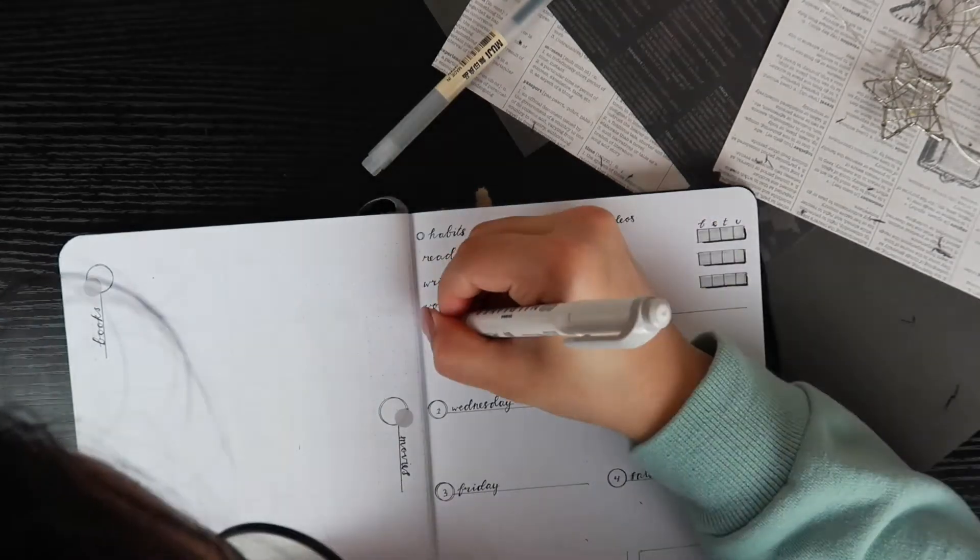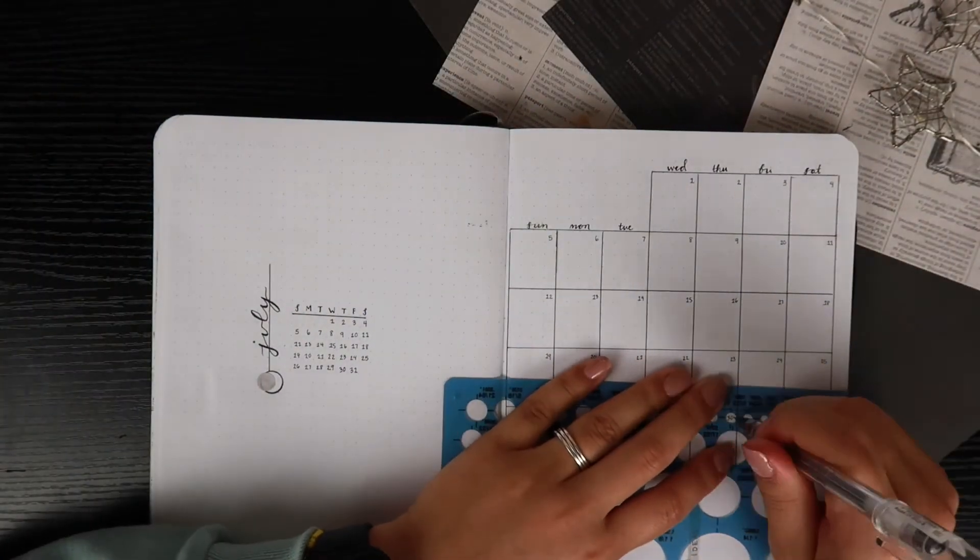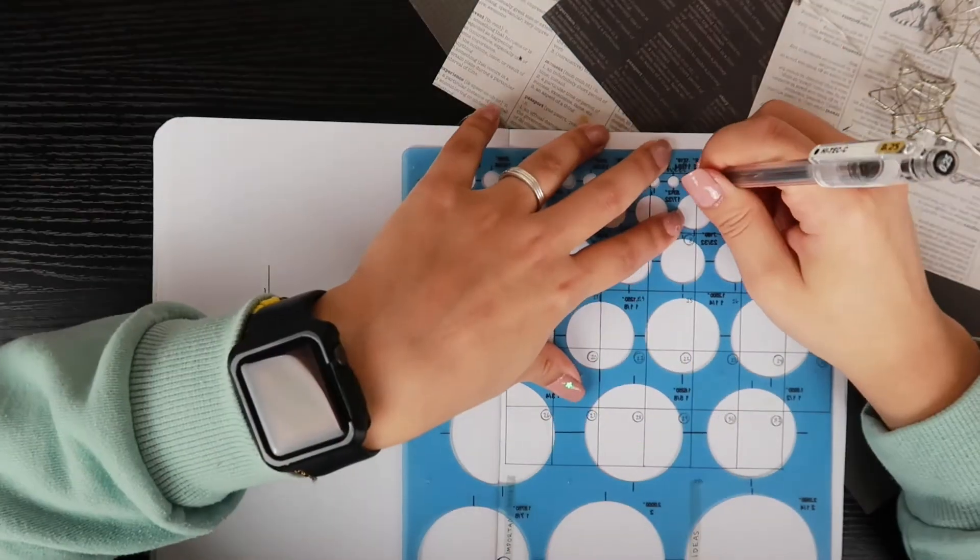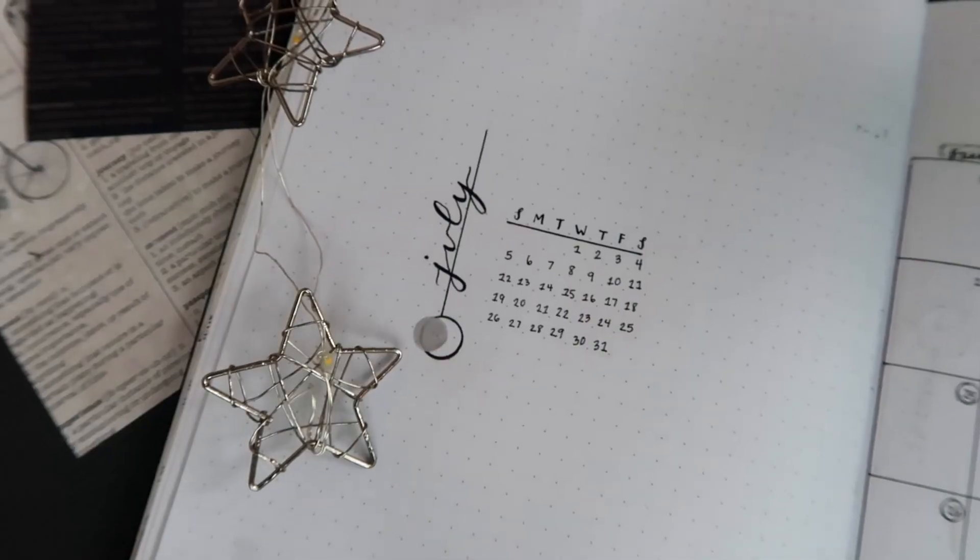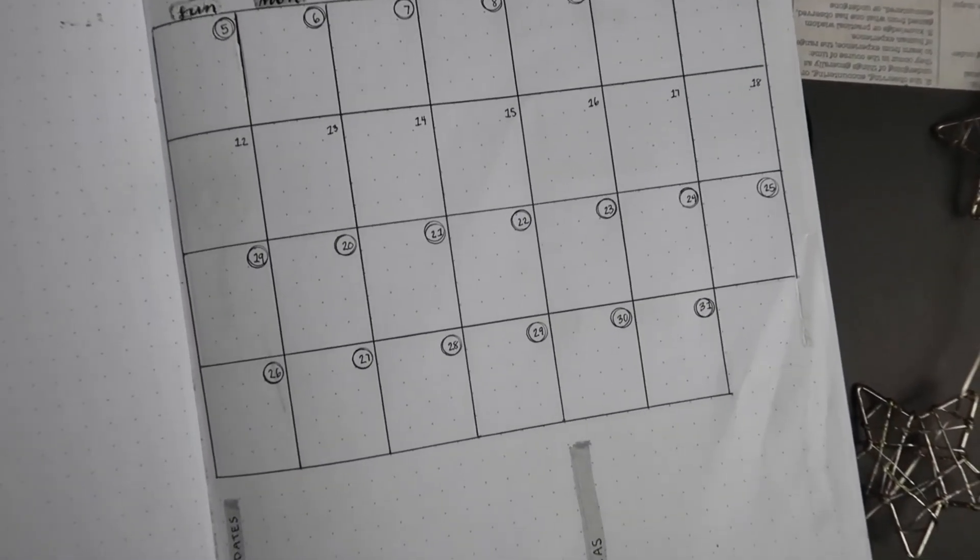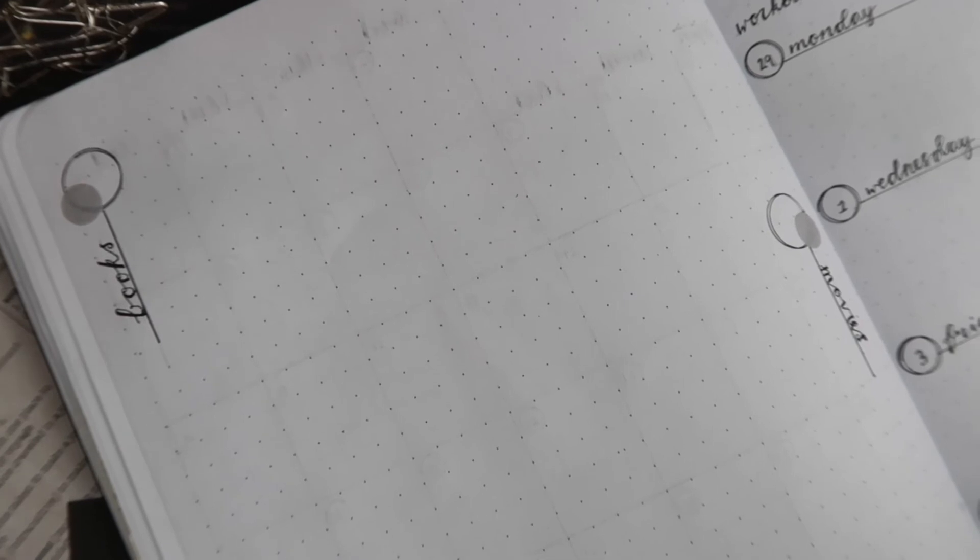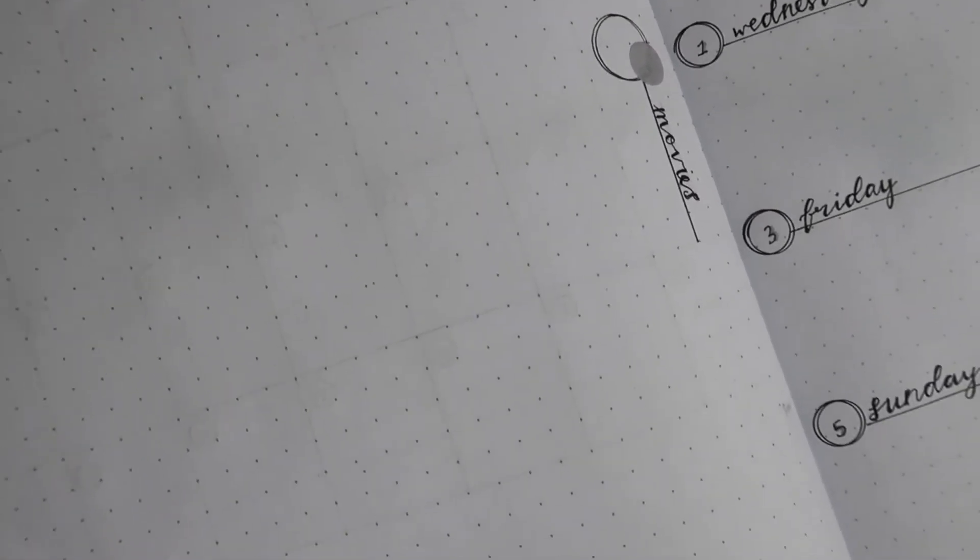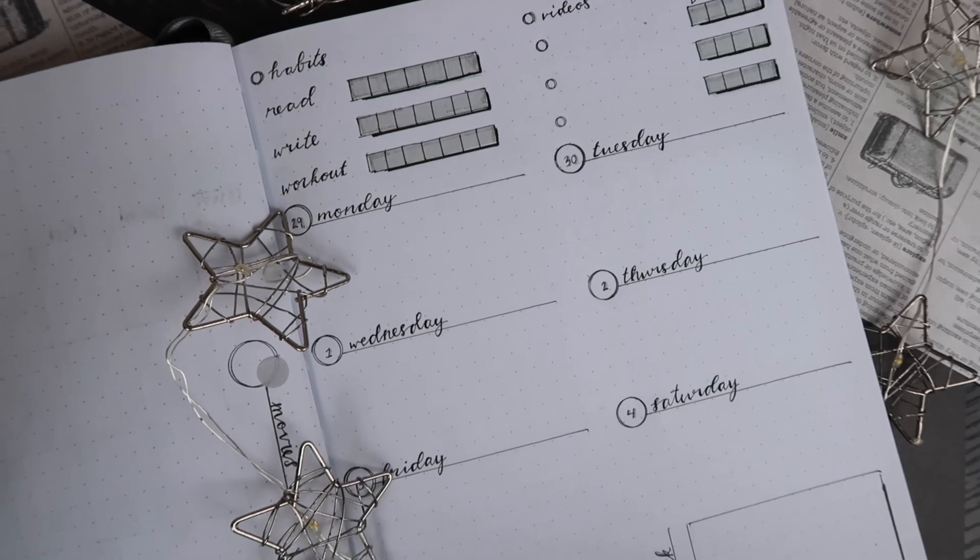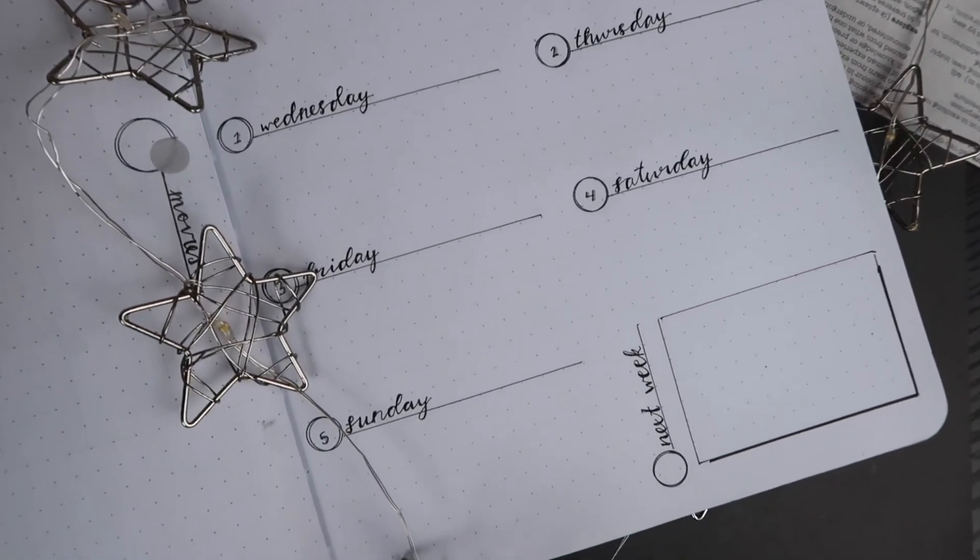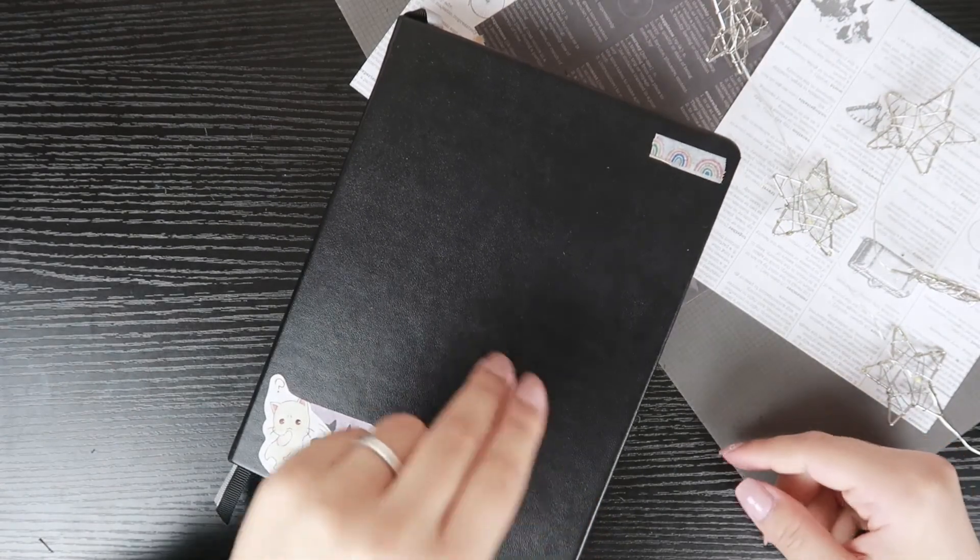And then I go back in with the gray Mildliner and just add a drop shadow to the numbers and little circles. Then I went back and felt like the monthly page was kind of bland, so I accentuated each number with a circle and accented the days of the week with gray. So I hope you enjoyed this monthly setup and that your July is filled with productivity. I'll see you guys in my next one. Peace out.